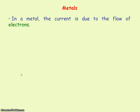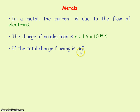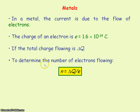In a metal, the current is due to the flow of electrons. The charge of each electron is given by e, which represents the elementary charge, equal to 1.6 times 10 to the minus 19 coulombs. If we know the total charge flowing is delta Q and we need to determine the number of electrons flowing, we take our total flow of charge and divide it by the charge of each electron — because the number of electrons multiplied by the charge of each electron gives the total charge flowing.